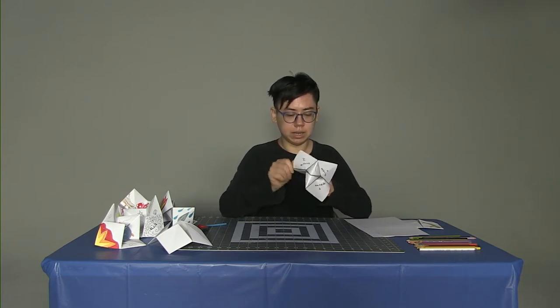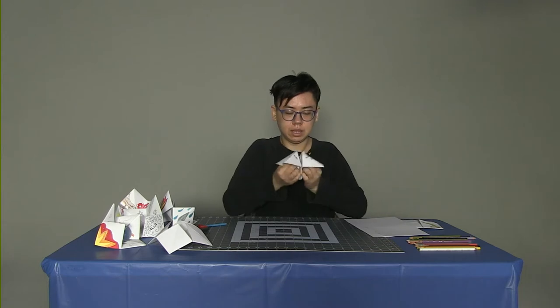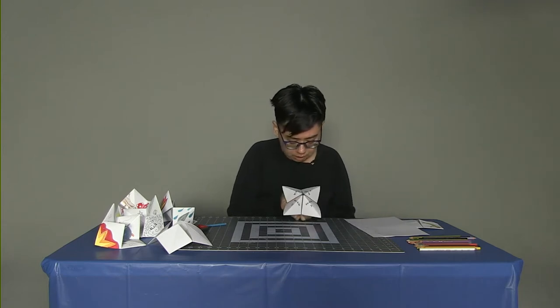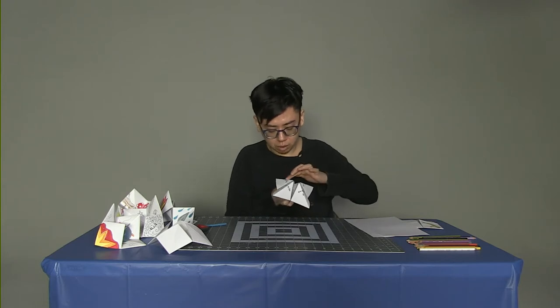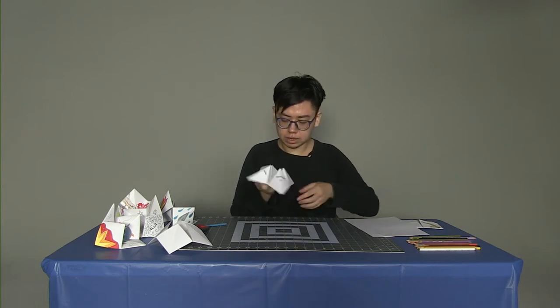So what we can see here is that in our fortune teller we have a part that I am calling the outside. So we have one two three four sections on the outside.